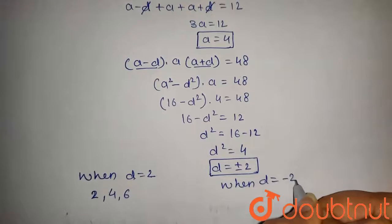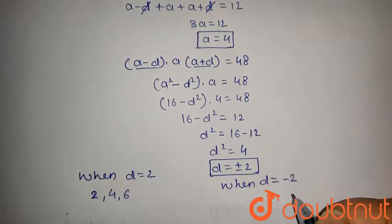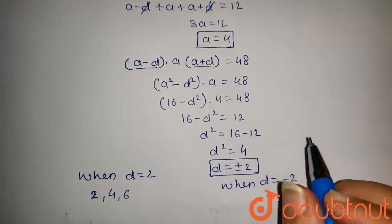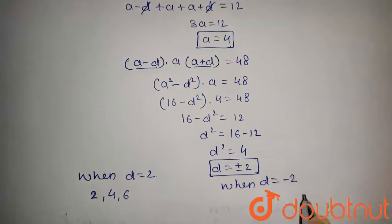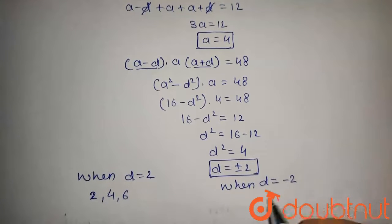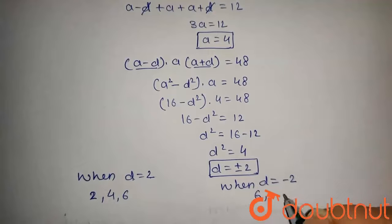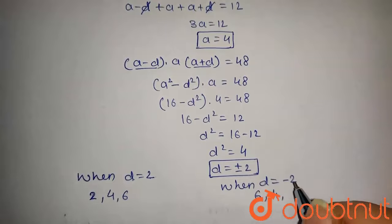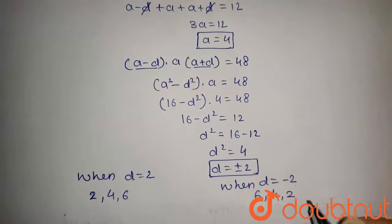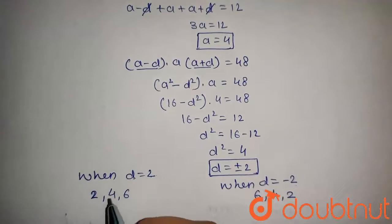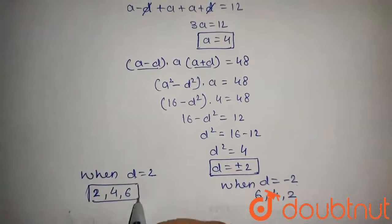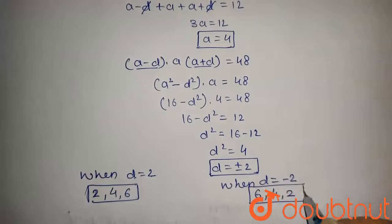Now when we take d equals minus 2, we get the first term as a minus d, that is 4 minus minus 2, which gives 4 plus 2, so it will be 6. The middle term is a, so it will be 4. And a plus d, that is 4 plus minus 2, which will be 4 minus 2 equals 2. So these are the required numbers.